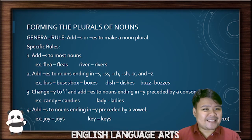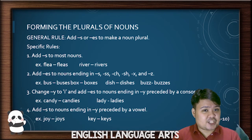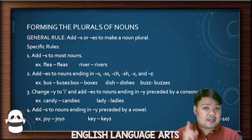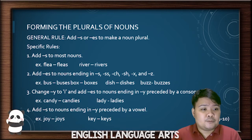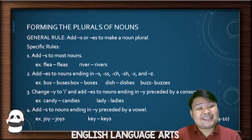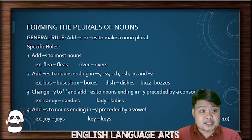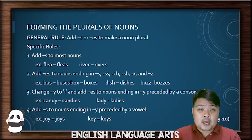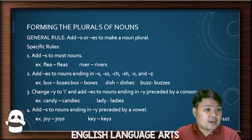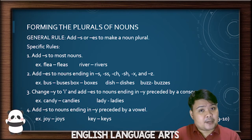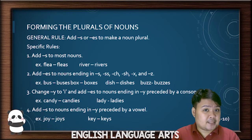But if nouns end in S, SH, X, or Z — like in number 2 — you add ES. For example: bus becomes buses, box becomes boxes, dish becomes dishes, and buzz becomes buzzes.